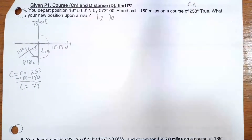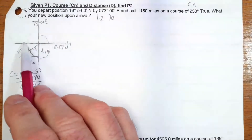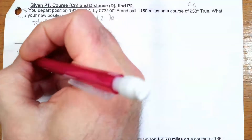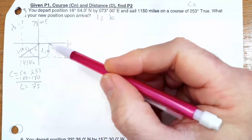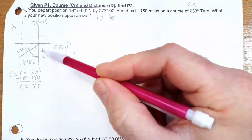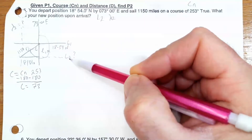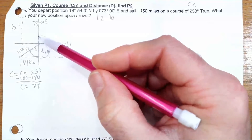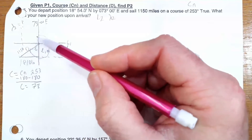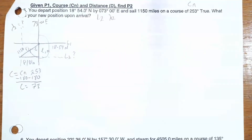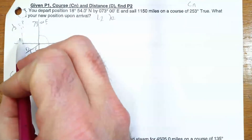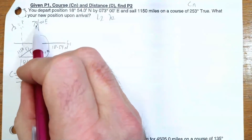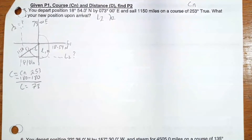Now, I have L1 and longitude 1, and what I want is L2 and longitude 2. To find L2, I'm going to have to figure out my change in latitude — little L — and apply it to L1. And I'll need to calculate D-low and apply it to my first longitude to get my second longitude. Since my longitude is east and I'm going to the west, I'm going to have to subtract D-low later on. So let's go to Bowditch and figure out what formulas we need.